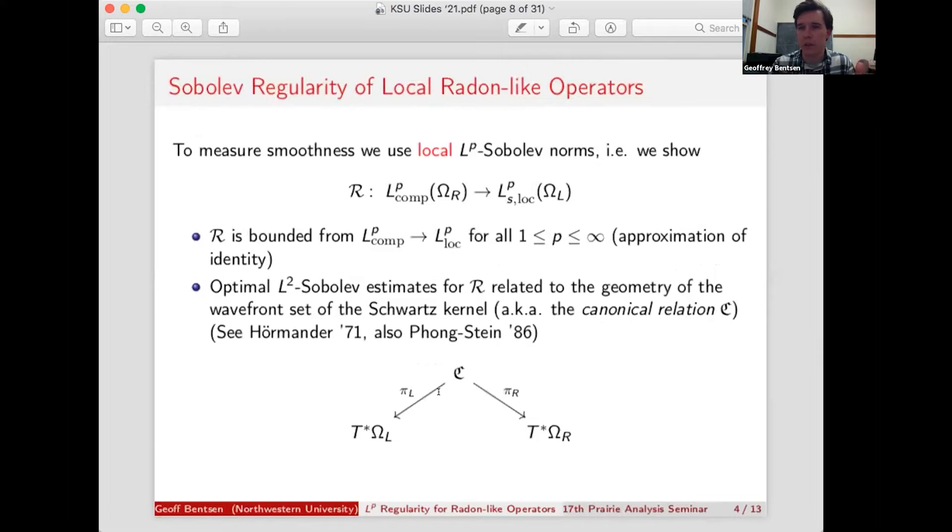So now that we know something about what a local radon-like operator is, and we have one example, I want to talk about what we mean by measuring LP-Sobolev norms. So LP-Sobolev regularity. Because these operators are defined locally, we can't use global LP-Sobolev norms unless we say something about the regularity of the boundary. But since I want to keep these omega-R and omega-L arbitrary, I just hit everything with smooth cutoffs. And then my norm depends on these smooth cutoffs, but that's fine. Everything is local anyway.